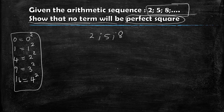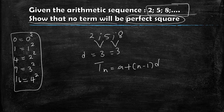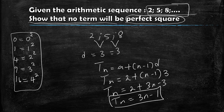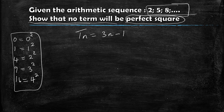First, I'll calculate my Tn for the arithmetic sequence 2, 5, 8. The common difference is 3. Tn = a + (n−1)d, where a = 2 and d = 3. So Tn = 2 + 3(n−1) = 2 + 3n − 3, which gives Tn = 3n − 1. That's my Tn for the arithmetic sequence.